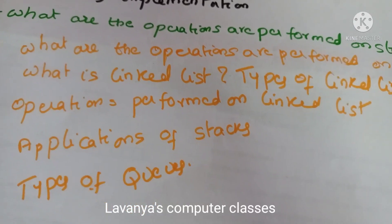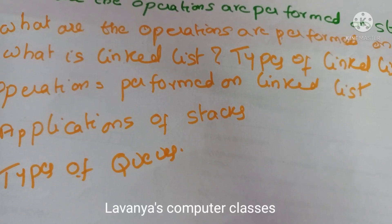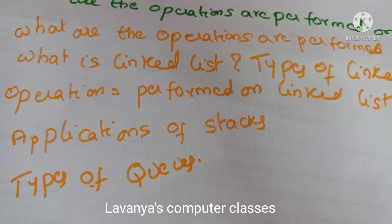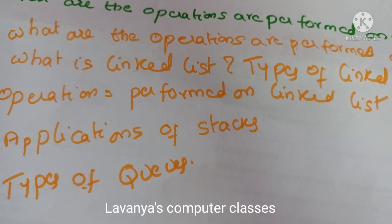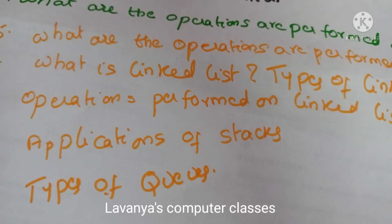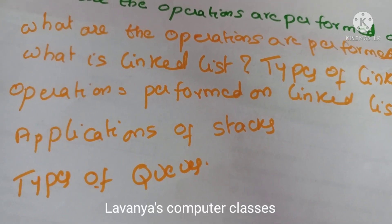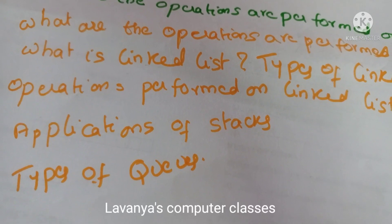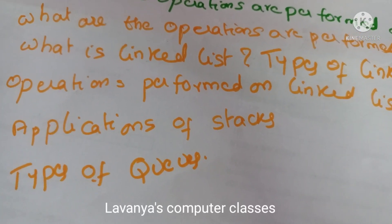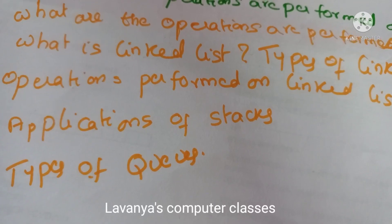After that, operations performed on linked list — insertion operation, deletion operation, and searching. Insertions at the beginning, insertion in the middle, insertion at the end — all three cases must be represented. For deletion also the same: deletion in the middle and deletion at the end. Then applications of stacks, and types of queues — priority queue, double ended queue, and dequeue.